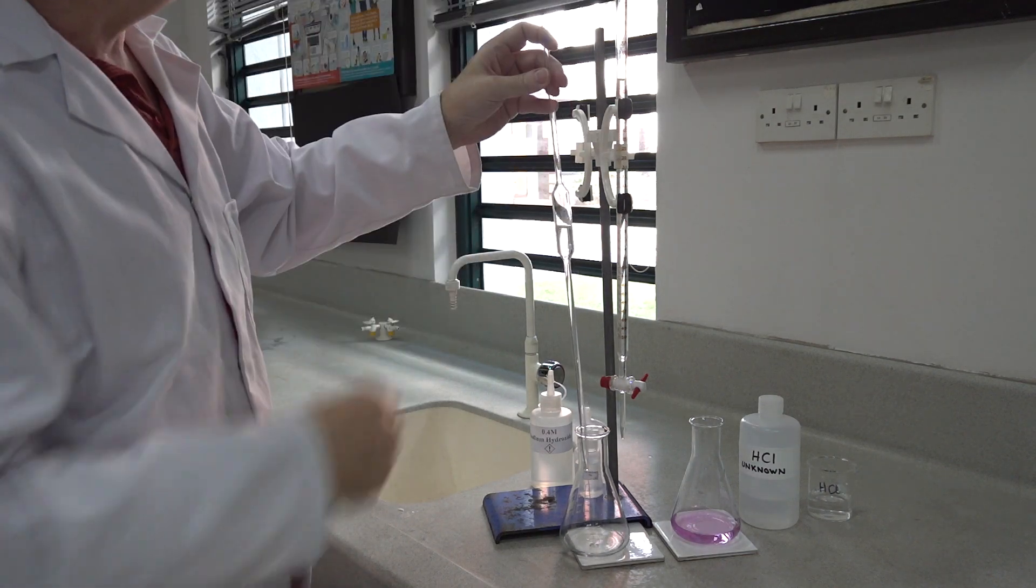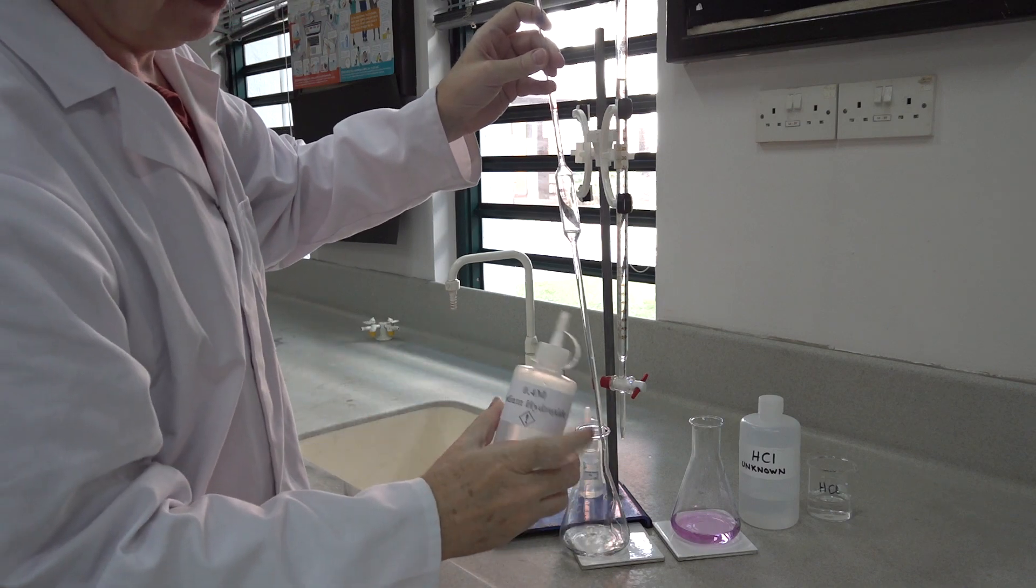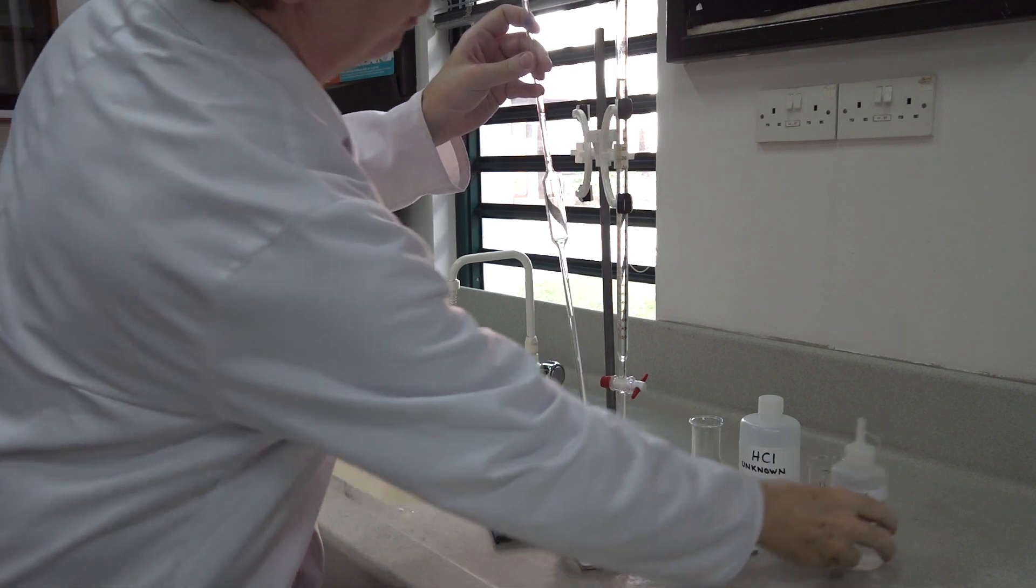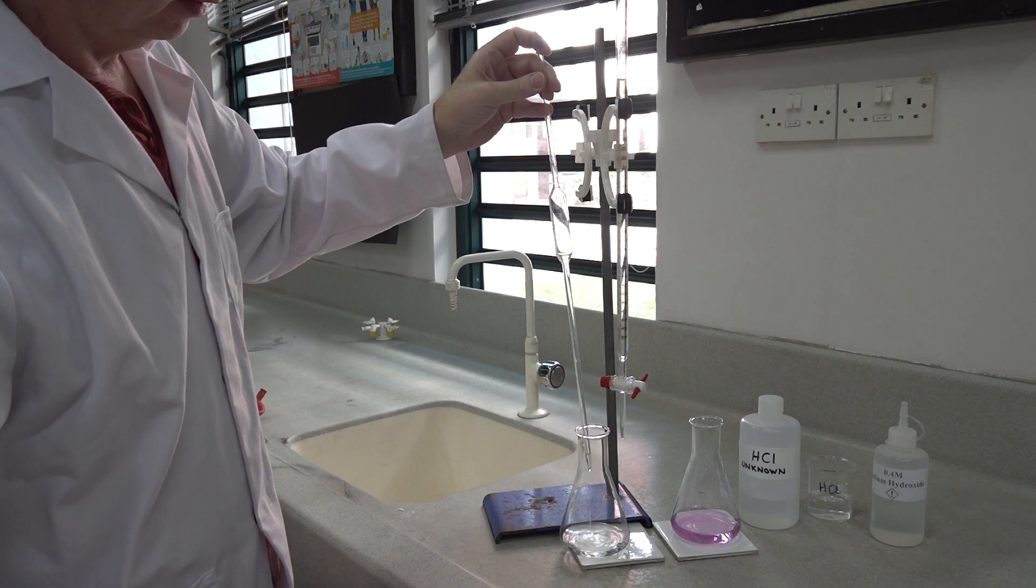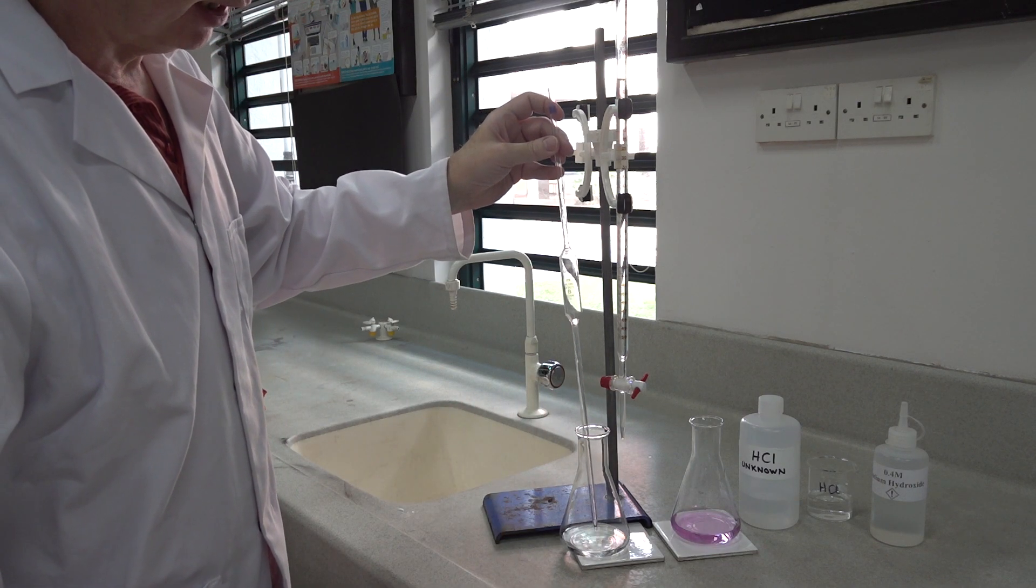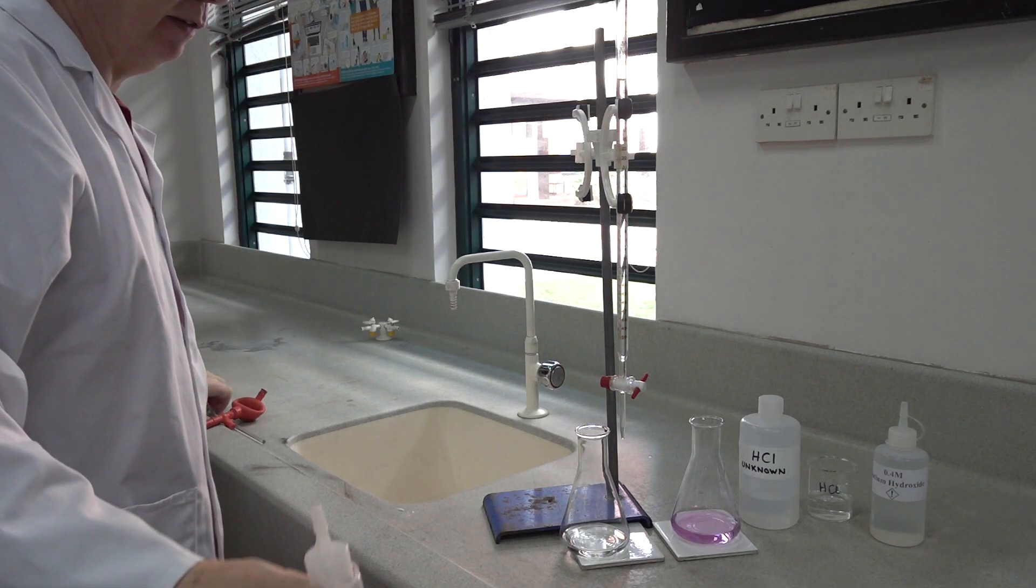In the burette, we've got sodium hydroxide of 0.4 molar concentration. We just need to tap the bottom of the pipette into the solution. That gives us 25 centimeters cubed.